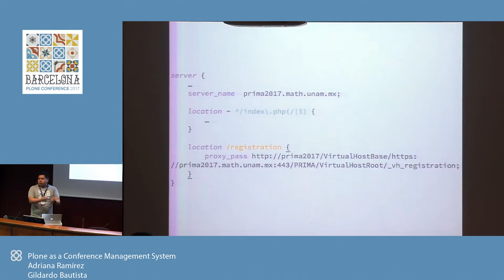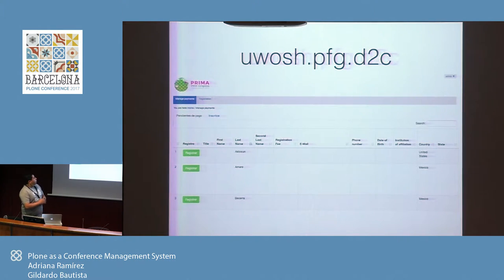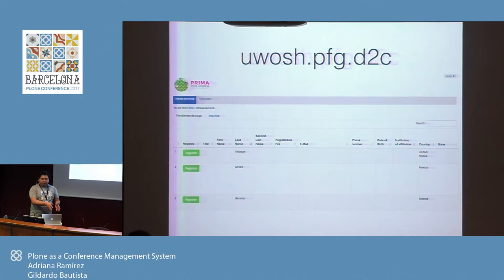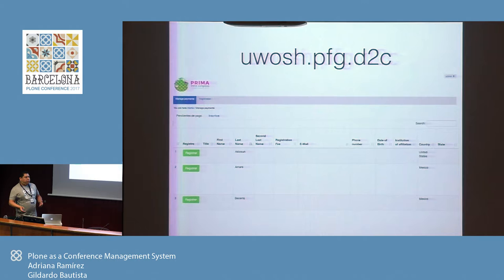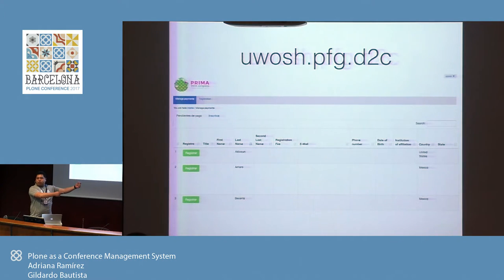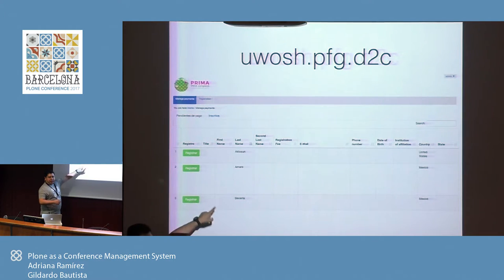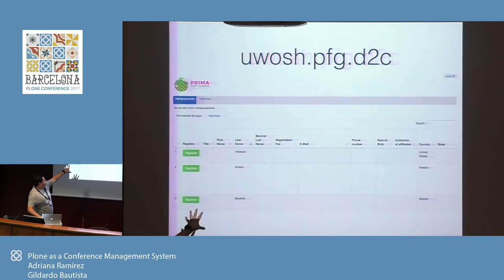We needed to apply a workflow to the registrations, so we needed content. We used a product called uwosh.pfg.d2c (PloneFormGen data content), which I think you developed, Kim. It was very helpful because every registration becomes a content type and we can apply workflows there. The requirement was that once the user registered, they had to make the payment at the online store, and then someone could move the object to a state marking it as paid for registration. This worked very well for them.